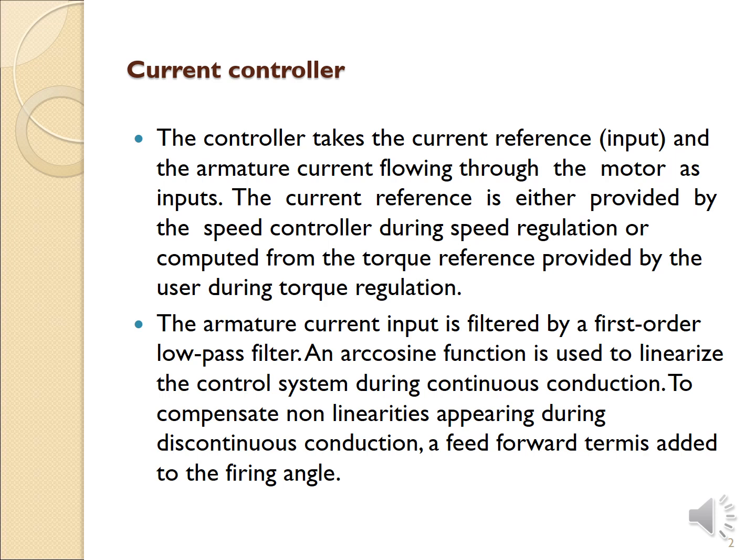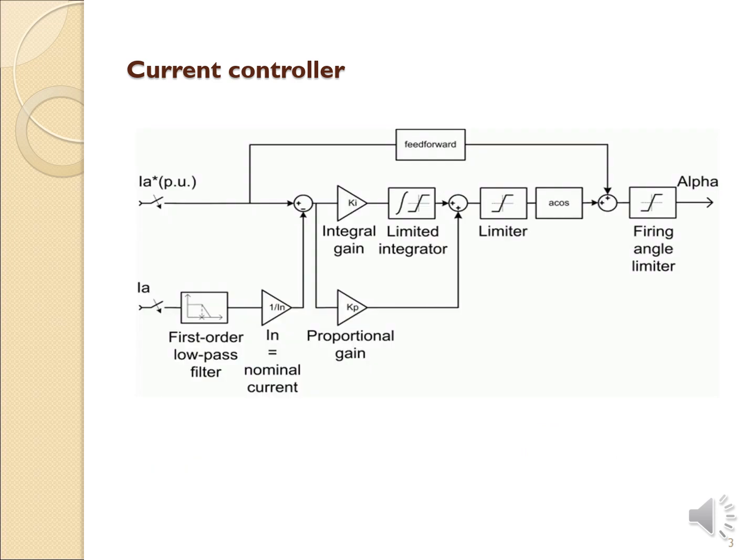The armature current input is filtered by a first-order low-pass filter, and this function is used to linearize the control system during continuous conduction conditions. To compensate for non-linearities appearing during discontinuous conduction, a feed-forward term is added to the firing angle.